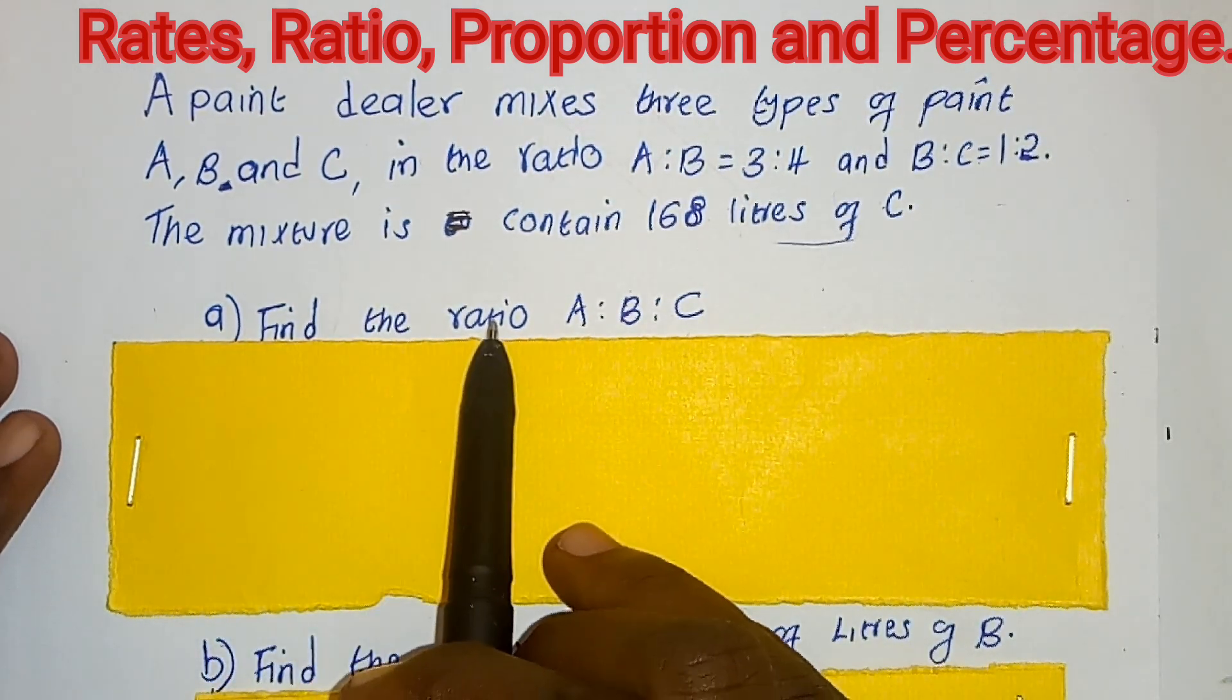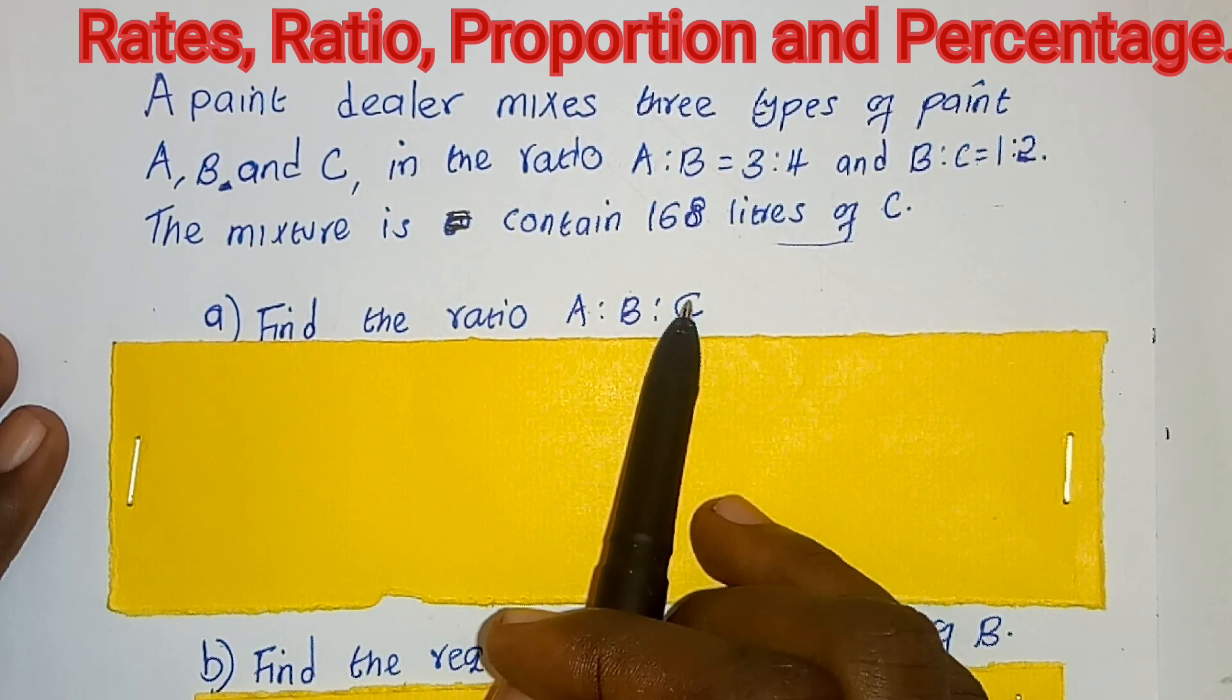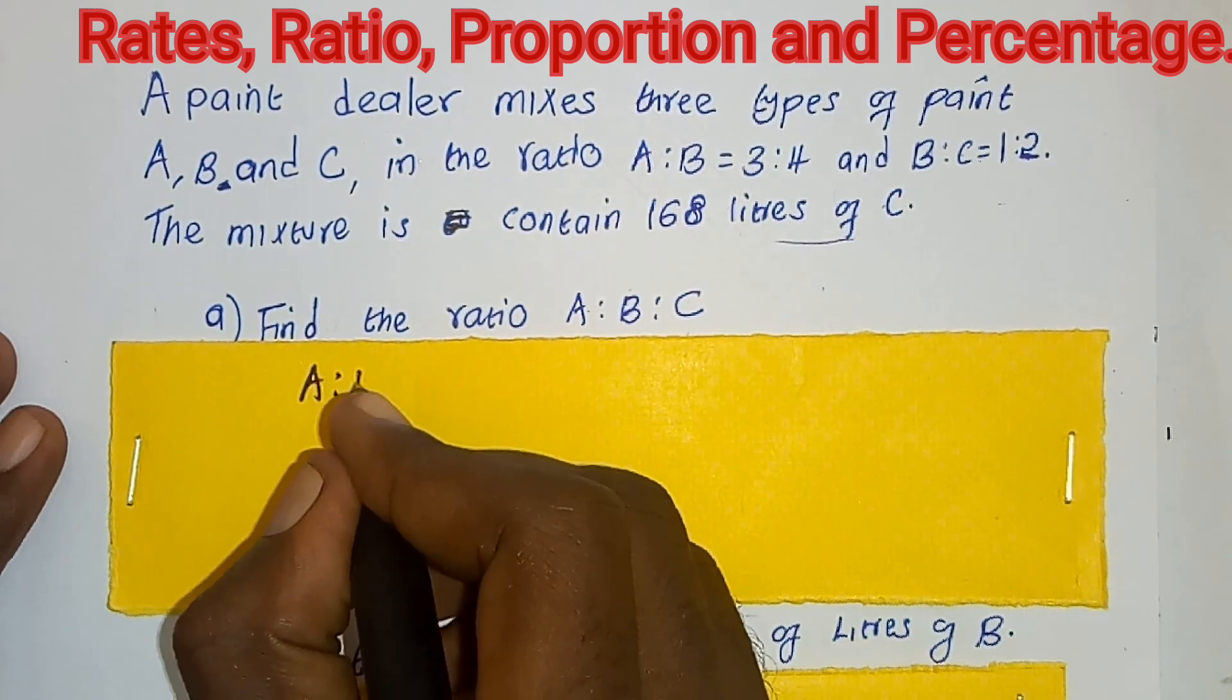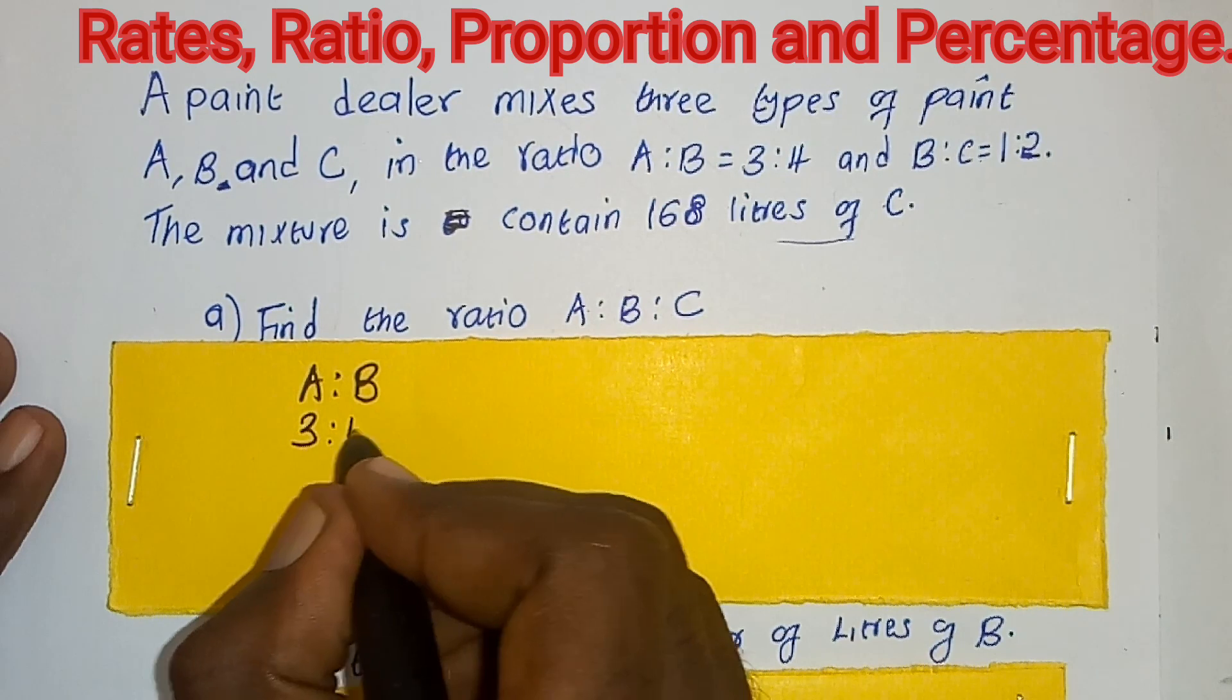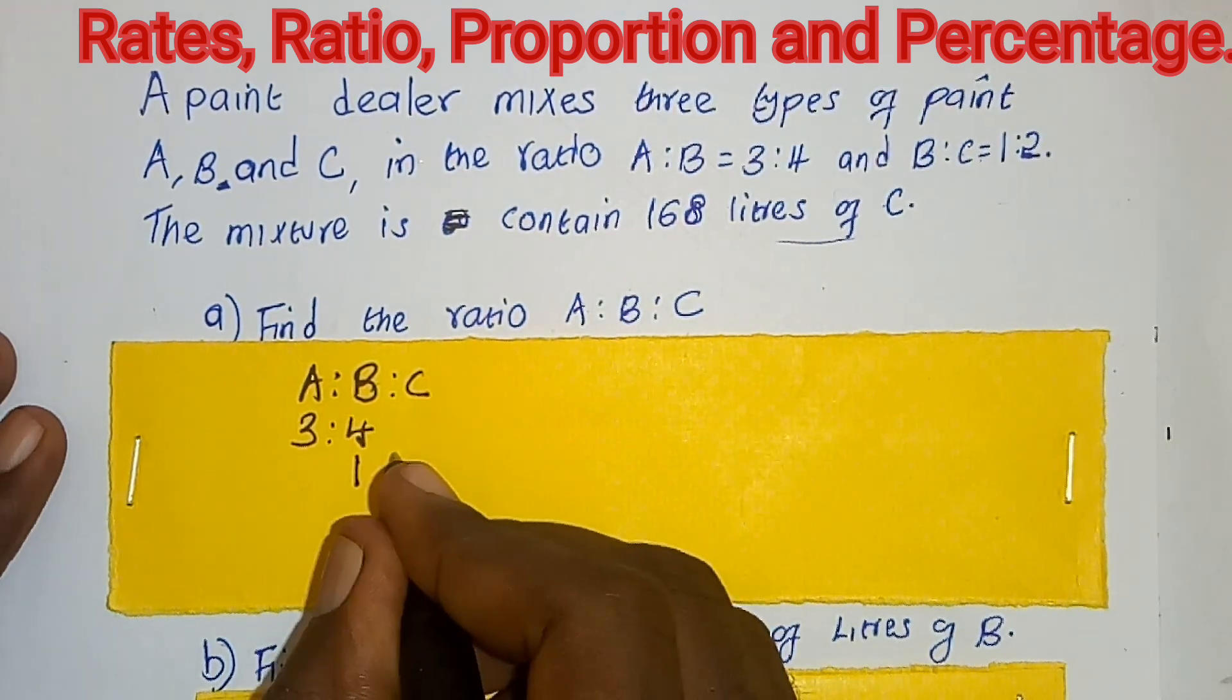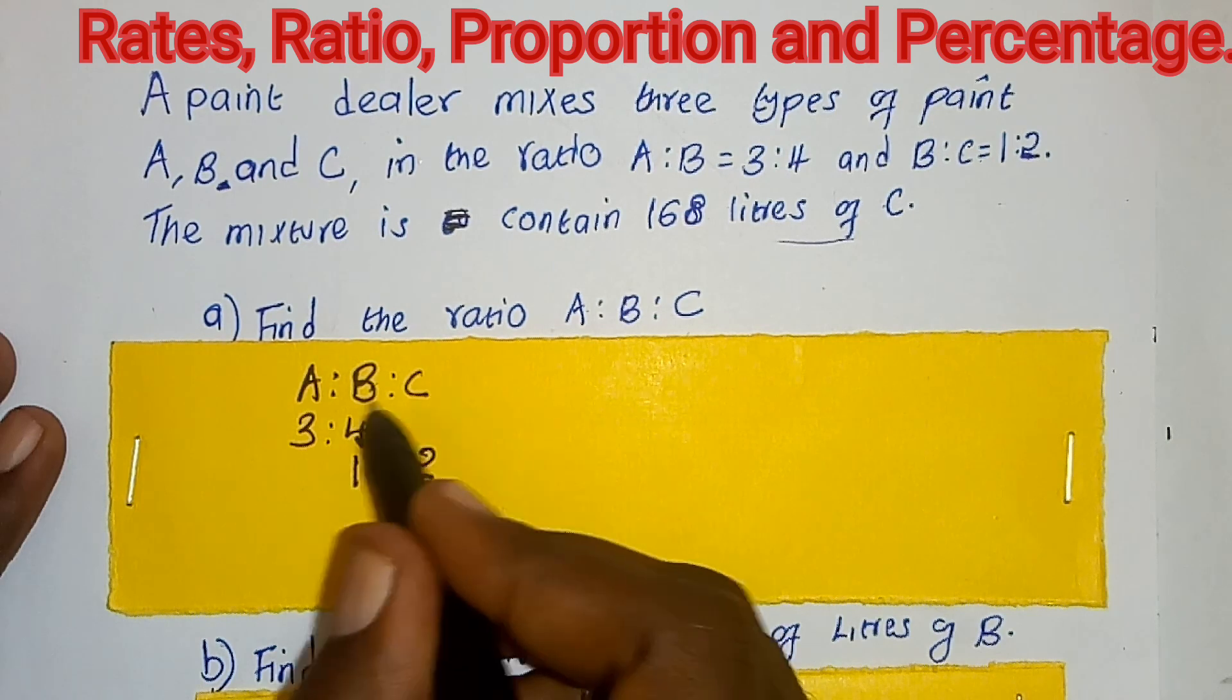Let us write now. The ratio of A is to B is 3 is to 4. The ratio of B is to C is 1 is to 2. Let us make the value of B to be the same.